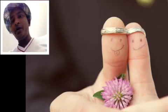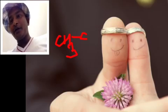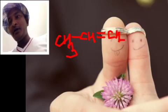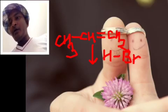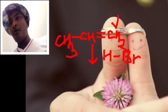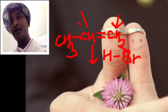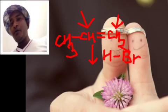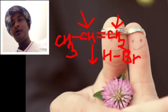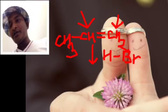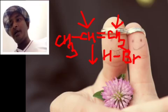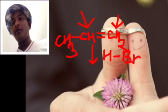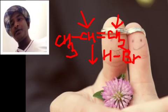The substrate of this rule is an unsymmetrical alkene such as propene. When this unsymmetrical alkene reacts with an unsymmetrical reagent such as HBr, then the positive part of the reagent attaches to the carbon which has more number of hydrogens, while the negative part — Br⁻ — attaches to the carbon which has fewer number of hydrogens.